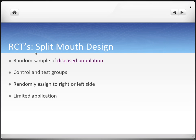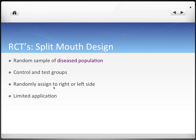Split mouth design also uses a random sample of a disease population with control and test groups, but this time we randomly assign the control and test to either the right or left side of the mouth — hence split mouth design. Again, each subject serves as their own control and it controls for possible baseline differences, but it has limited application. For example, if testing periodontal disease, which affects the entire mouth, a treatment would likely circulate to the other half of the mouth.